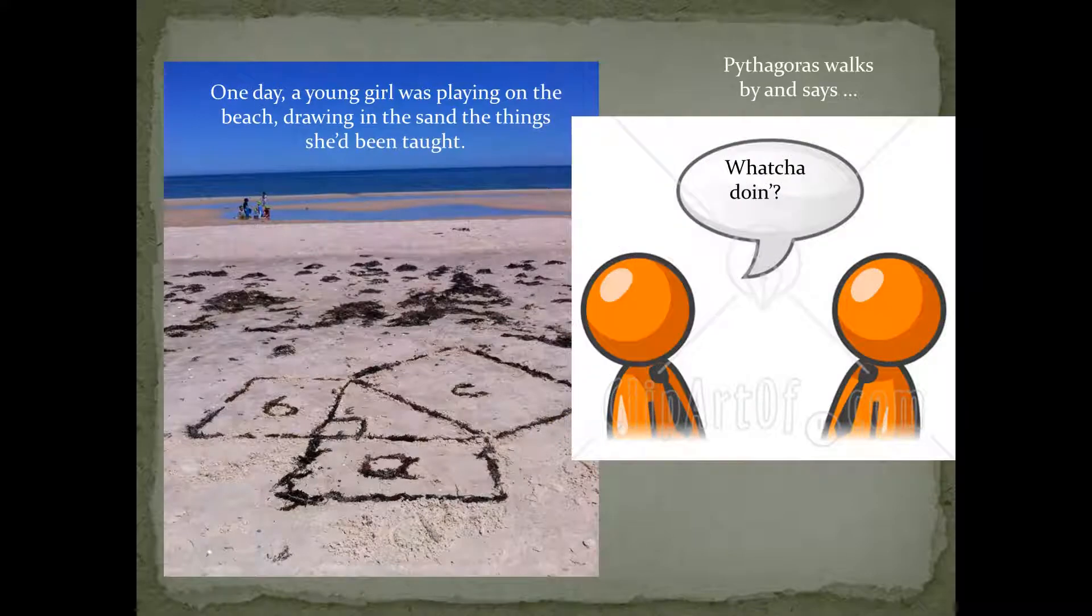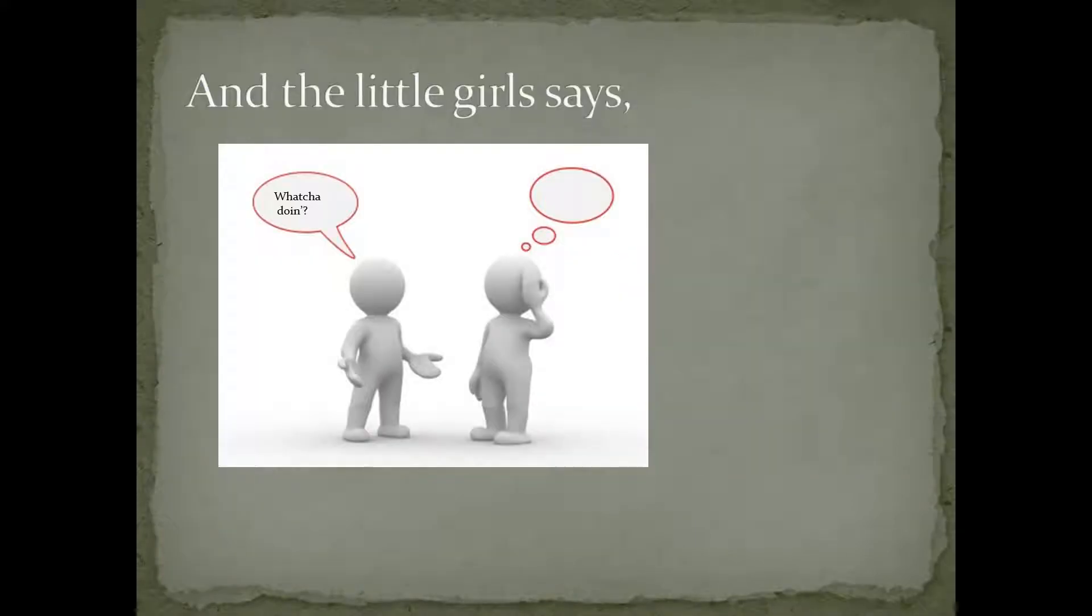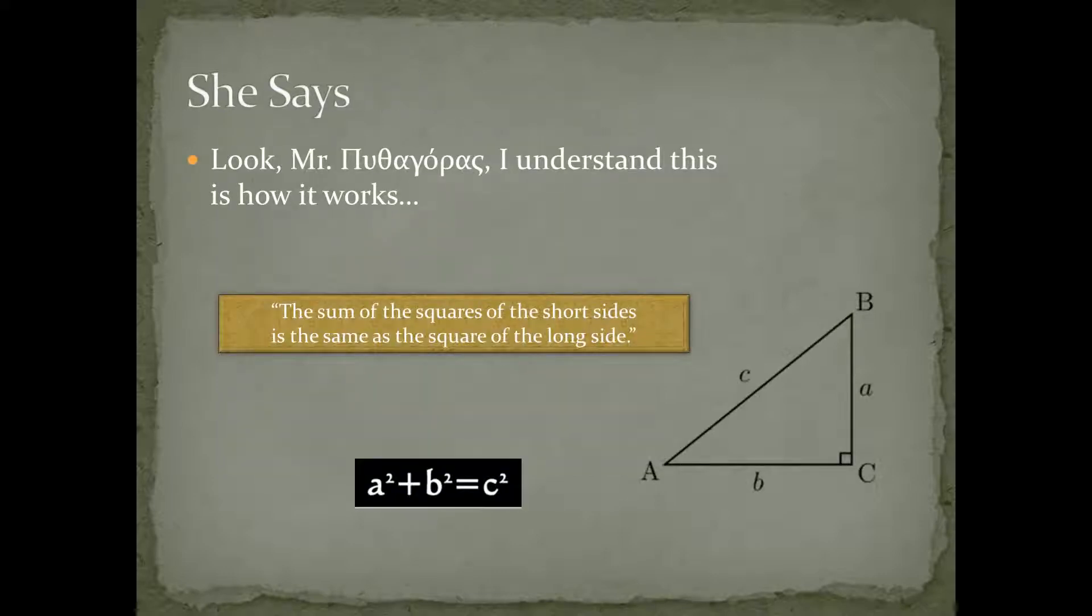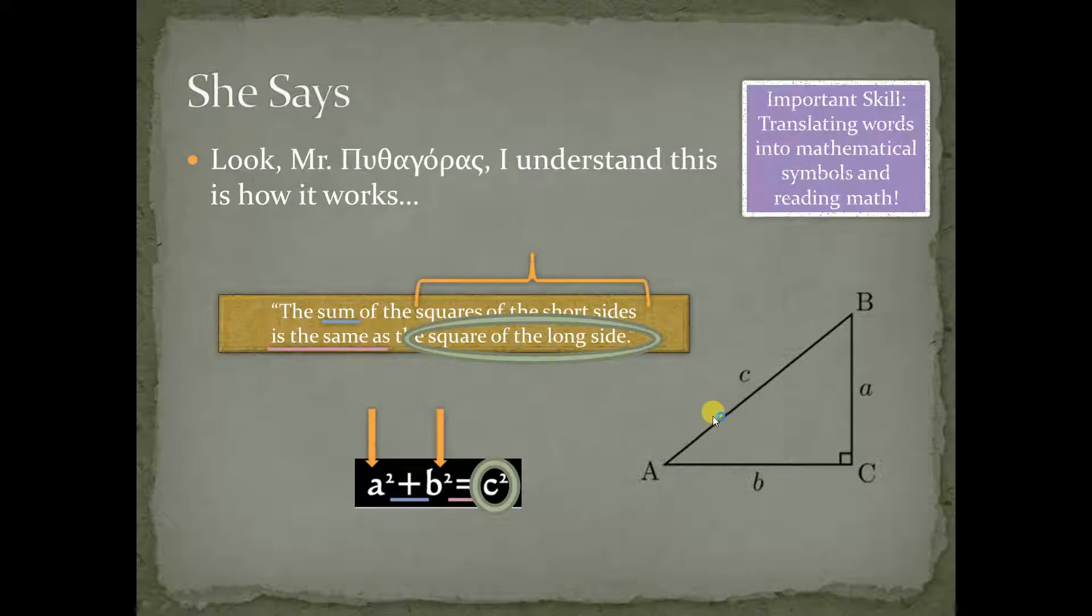So, suppose there's this little girl on the beach playing around and Pythagoras walks up and is like, Hey, what you doing? And she says, Well, I'm stuck. You see, Mr. Pythagoras, I know that this is how it works. I know a squared plus b squared equals c squared. And I know that the sum of the squares of the short side, by the way, sum is add, squares of the short side would be these, right? a squared and b squared, squares of the short sides, is the same as, which would be equals, the square of the long side. So, this sentence here is the same as the equation. The sum of the squares of the short side is the same as the square of the long side. And by square, we actually literally mean square. I'll show you that right here.